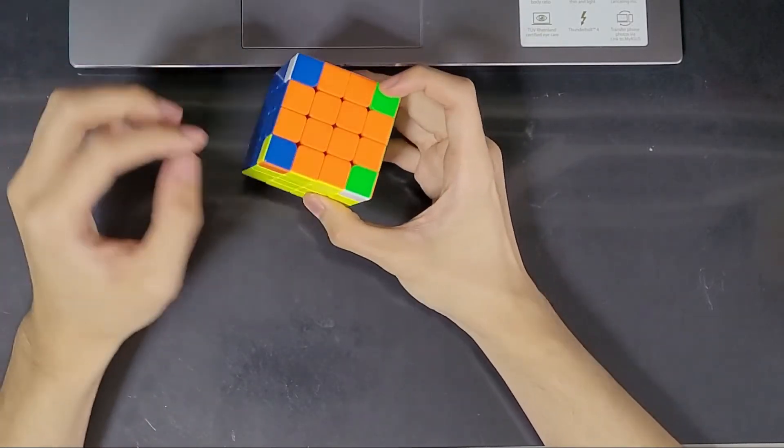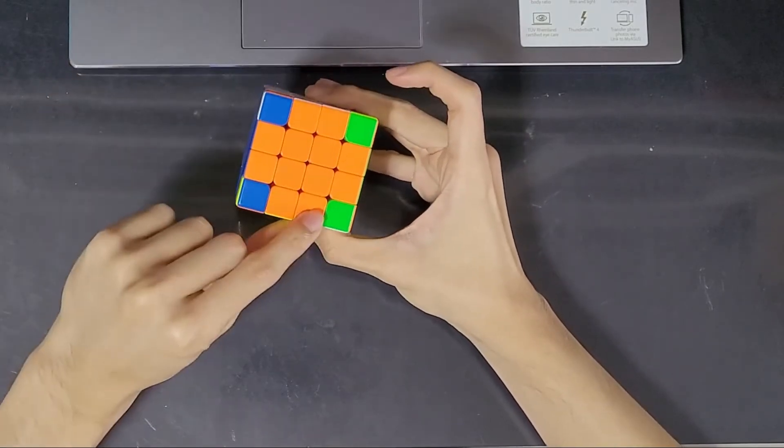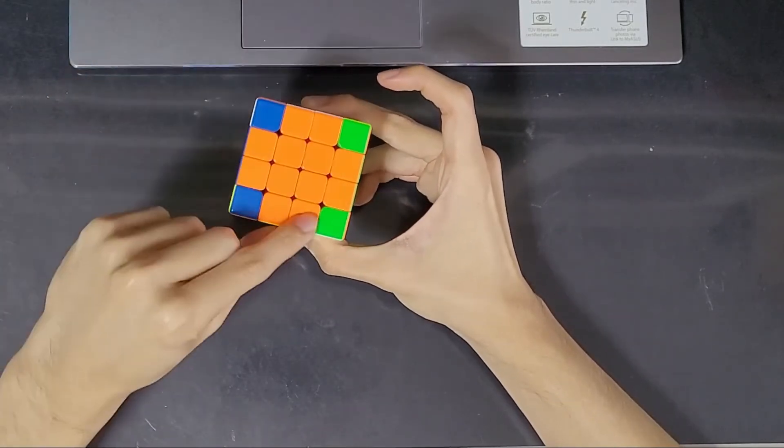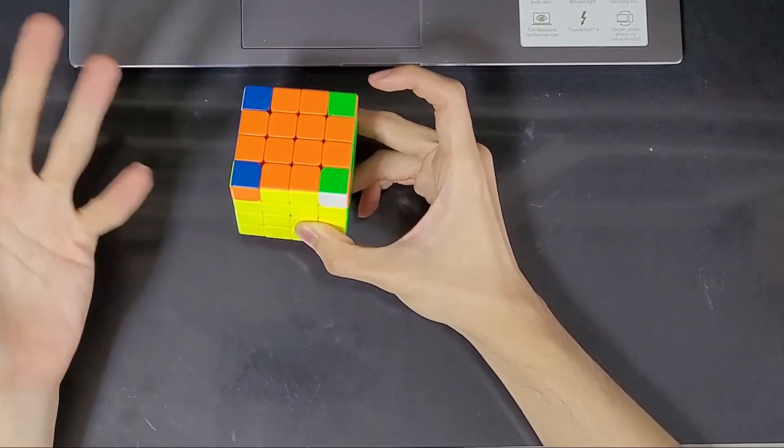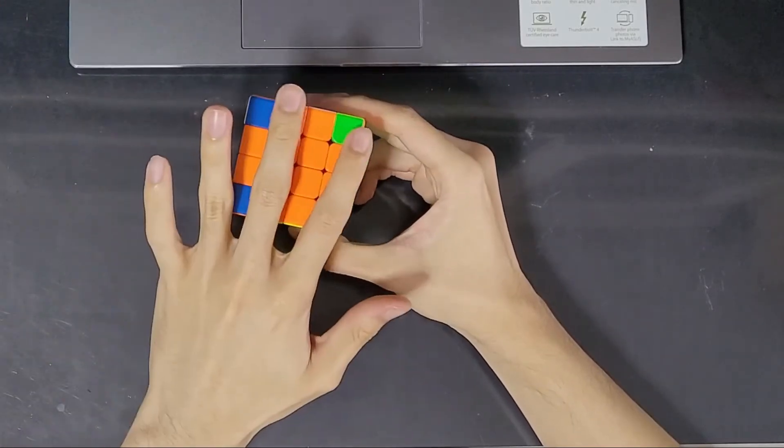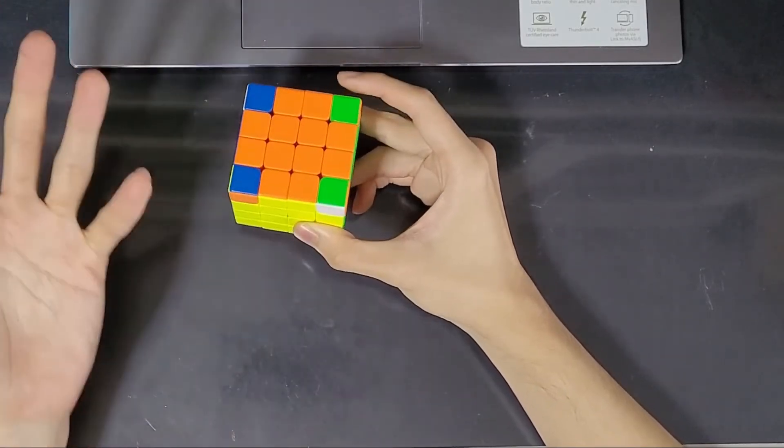To solve this case, we also need a special algorithm that will switch two opposite pieces. In this case, it's going to switch two opposite edges, which is not exactly going to solve our cube or bring us forward to solve. But at least it's going to make this situation here solvable by normal 3x3 methods.